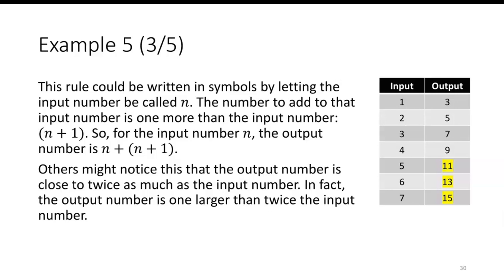Others might notice that this output number is close to twice as much as the input. In fact, the output number is one larger than twice the input. So if I take the 4 and times it by 2, then add 1, I end up with 9.